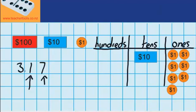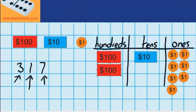And I can see that there's also some hundreds over here. There's three hundreds, so I'm going to have to move three of these $100 notes across. So there's one, two, and three. So you can see that 317 is made up of three hundreds, one $10 note, and seven $1 coins.